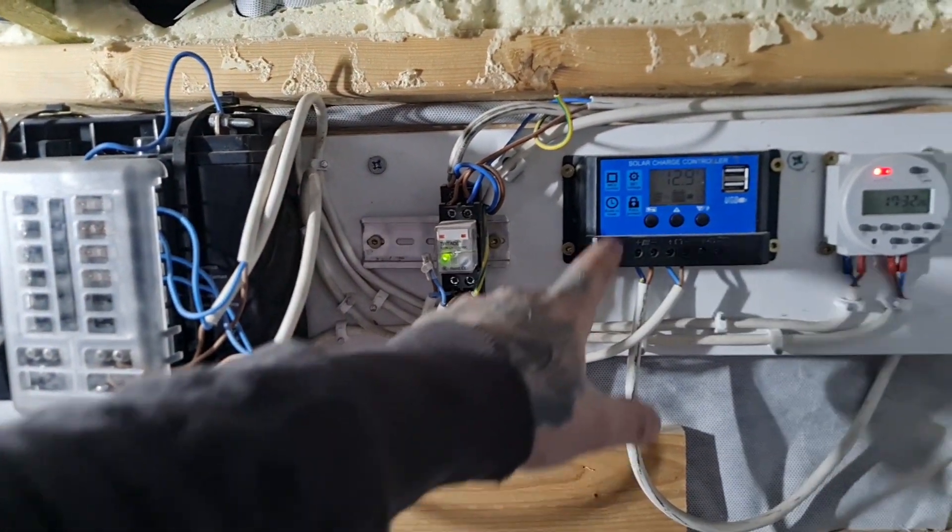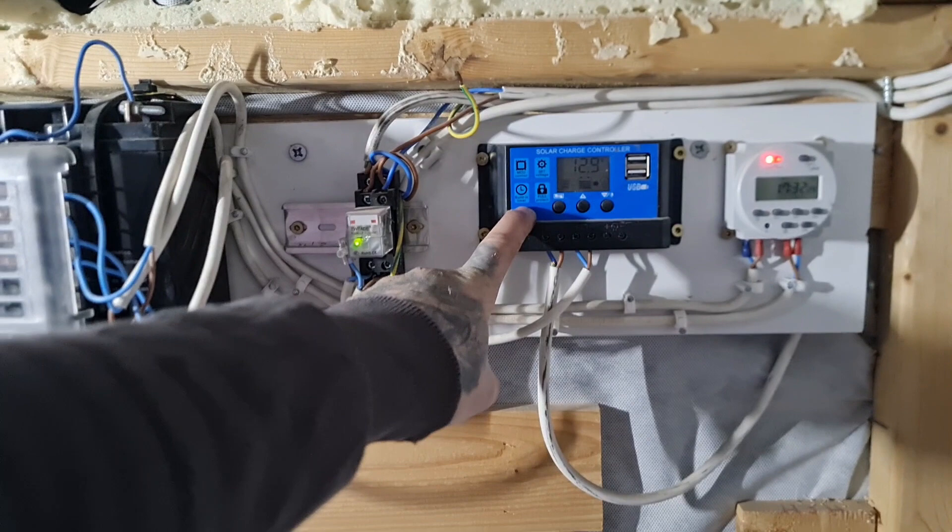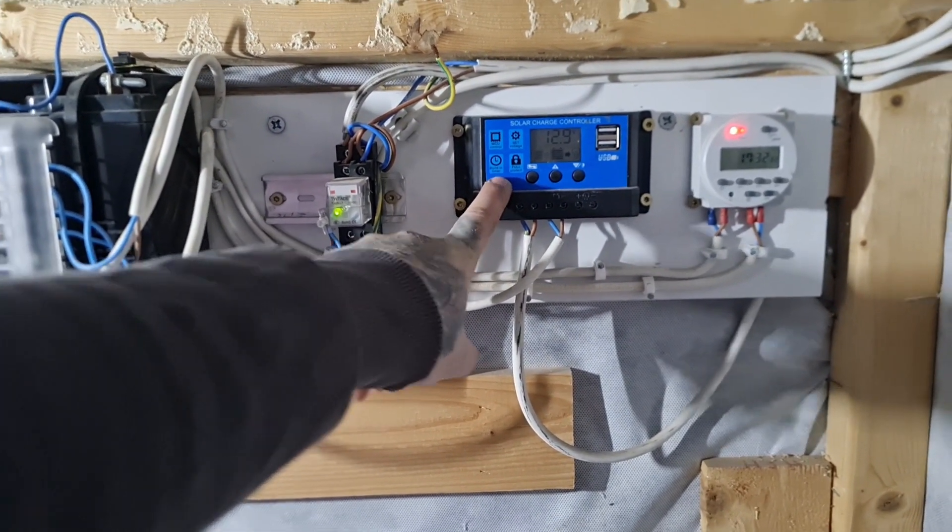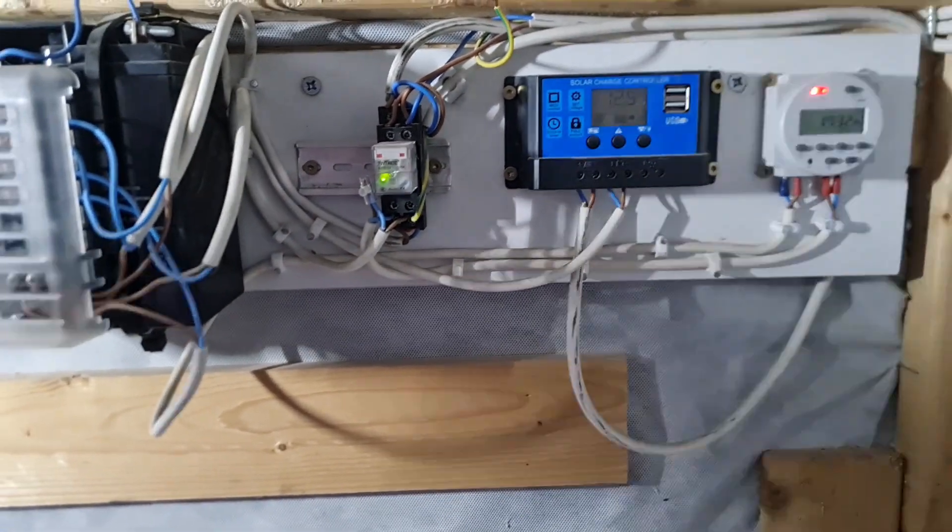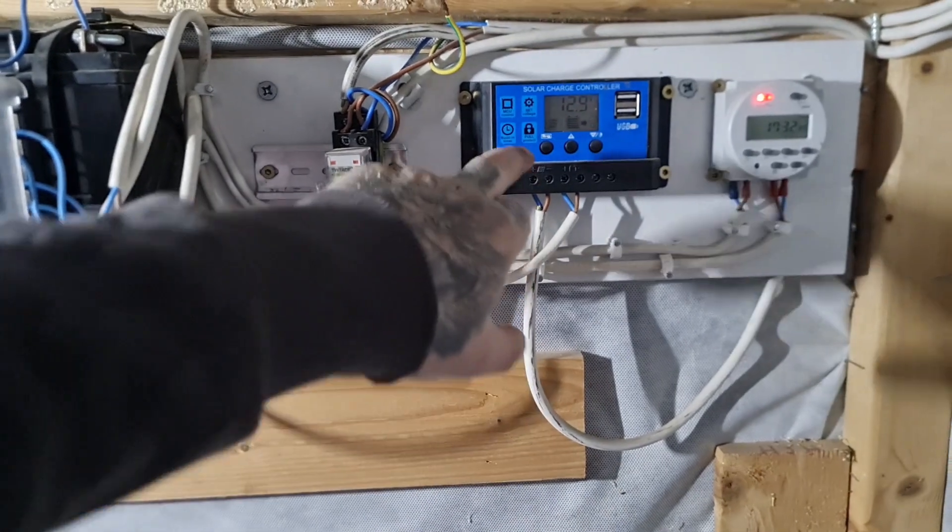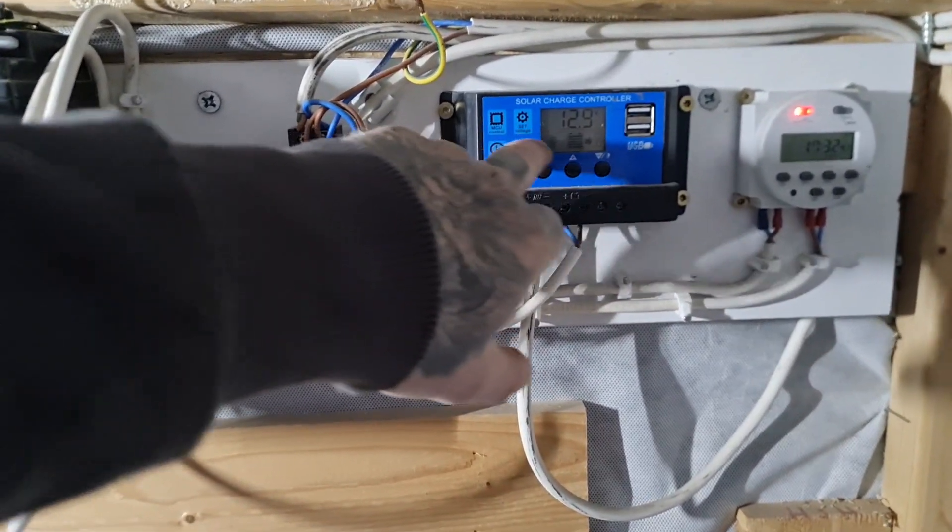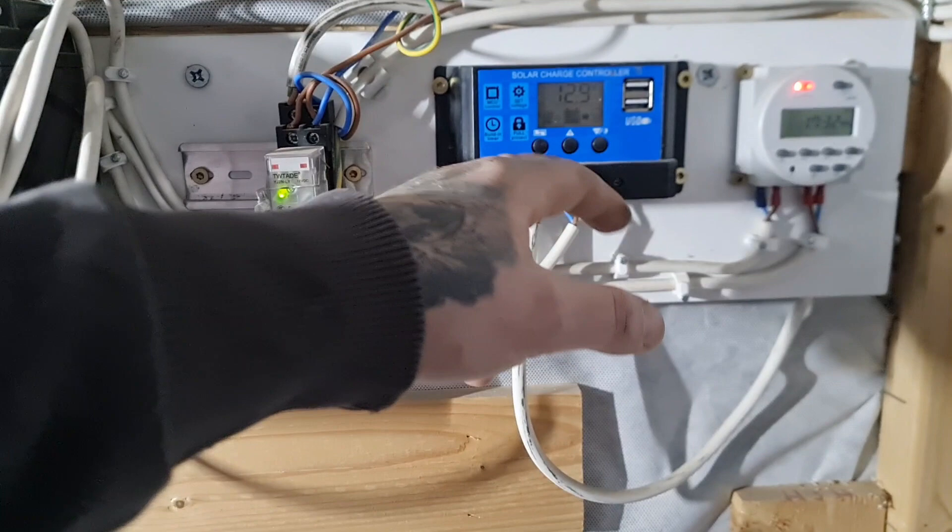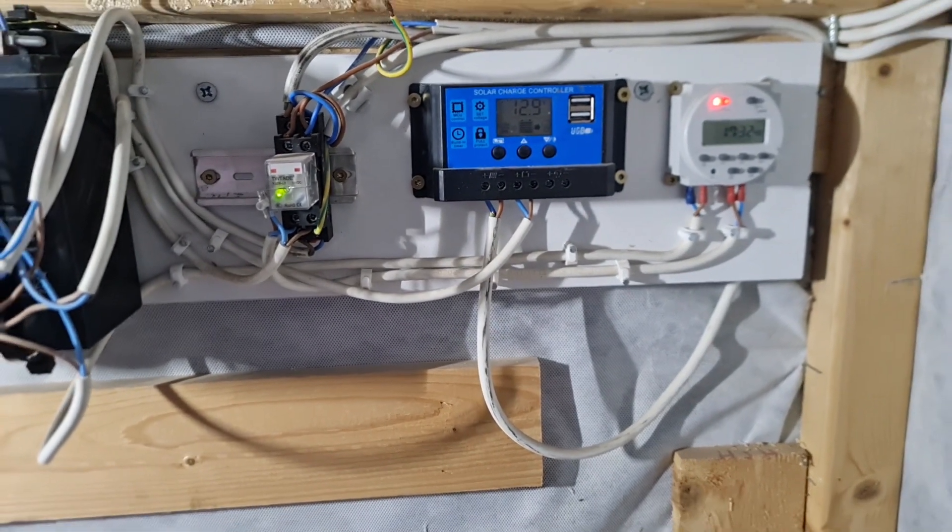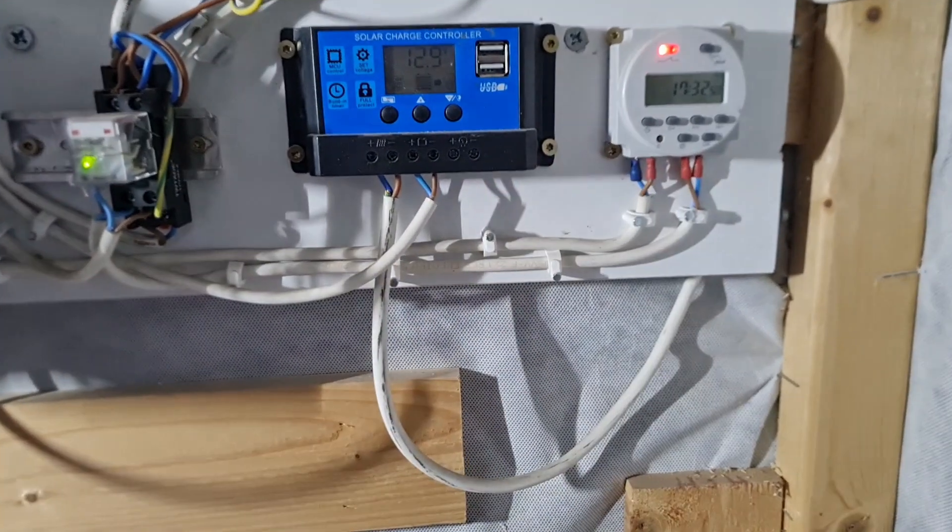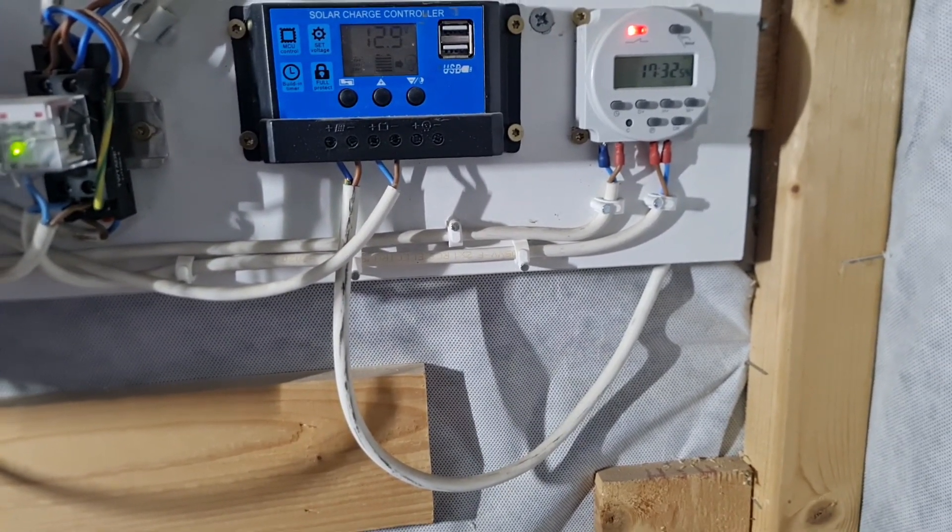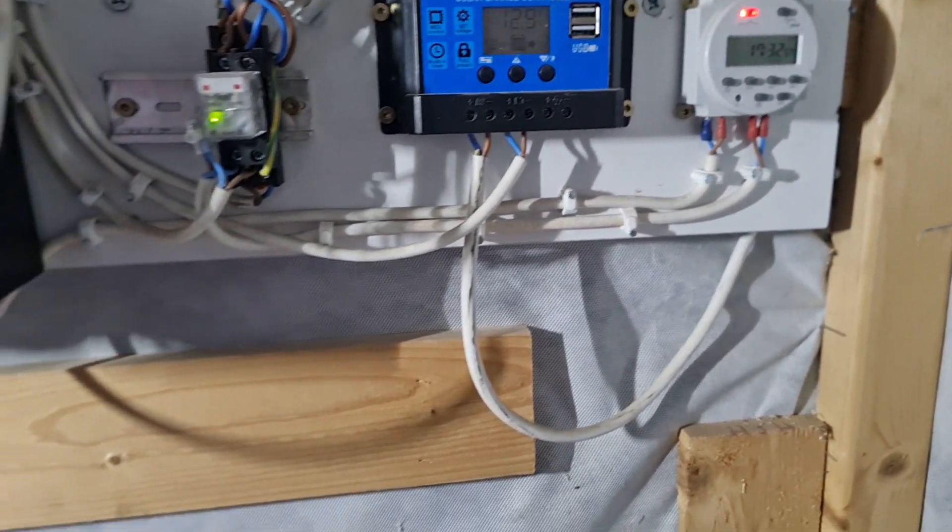The solar panel controller doesn't do much - it should control the power from the solar panel to the battery but this Chinese thing only shows the voltage and battery. The timer, you set up the time and it sends the signal to the relay.